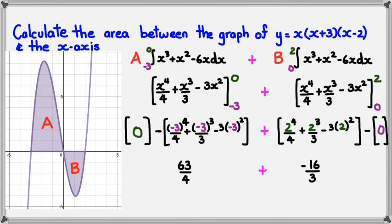So to accommodate this, remember that we need to take absolute values of both of them. Well, the first one is going to be 63/4 anyway, but this one will become positive 16/3.